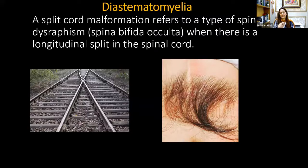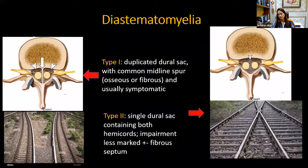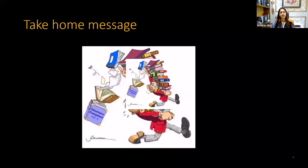In type 2 diastematomyelia, again confirm on axial images. You have two cords, but unlike type 1, there is no bony spur separating them — both cords share the same dural sac. To remember the types, think of train tracks: type 1 has two separate tracks with their own boundaries separated by bone, like two separate rail lines. Type 2 has the two cords sharing the same track — sometimes joined, sometimes separated. This is very important for the surgeon, who needs to know whether a bony spur must be removed when untethering the cord.